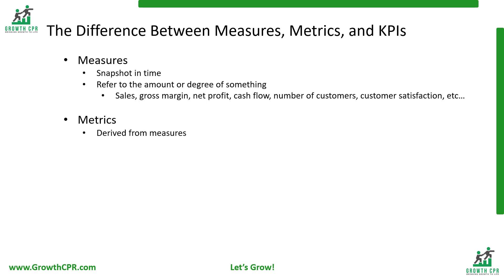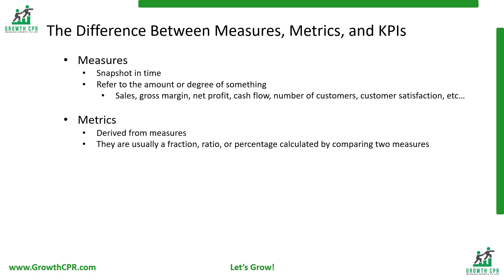Metrics are derived from measures. They are produced by a calculation between two measures and are usually expressed as a fraction, ratio, or percentage — we think of them as 'average blank per blank.' Metrics are used to assess a specific business process and provide a measure of performance.